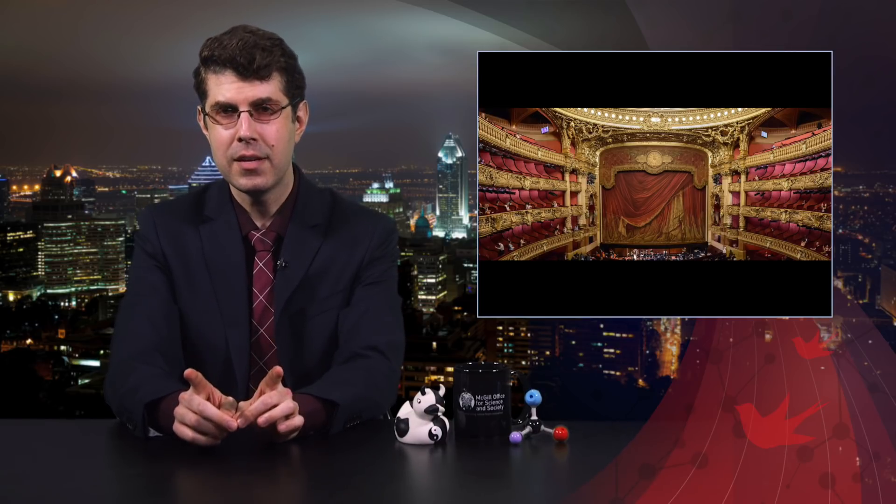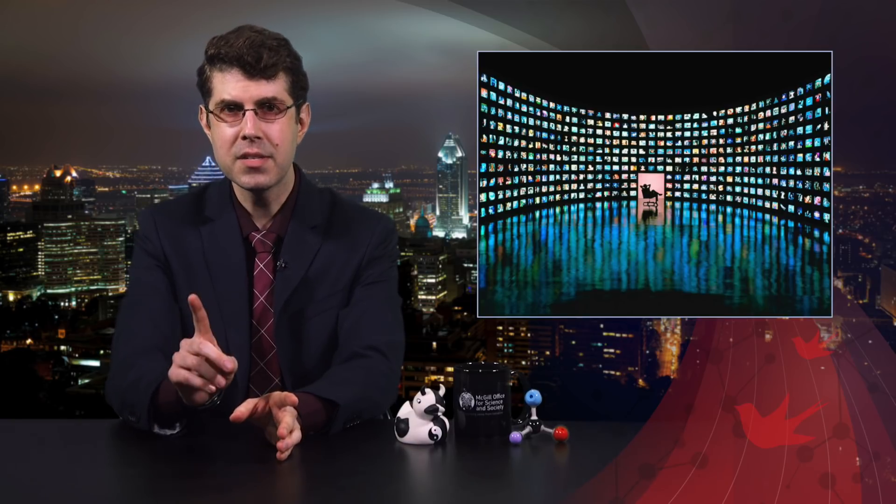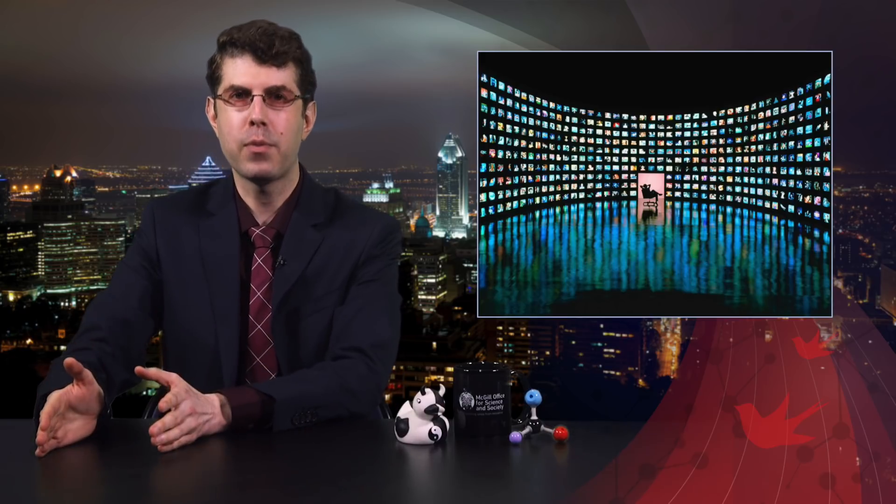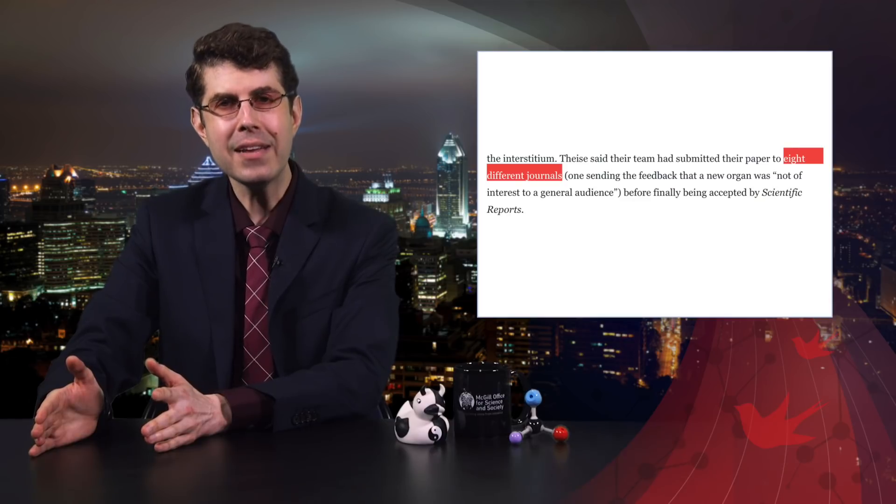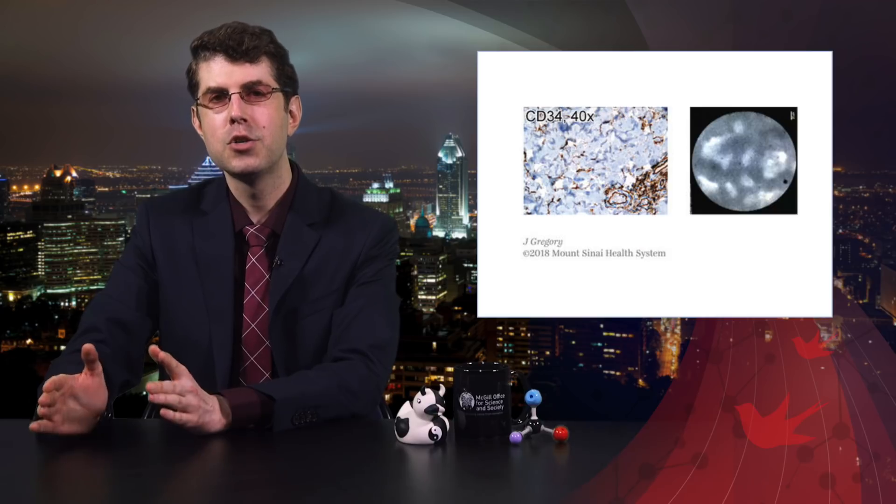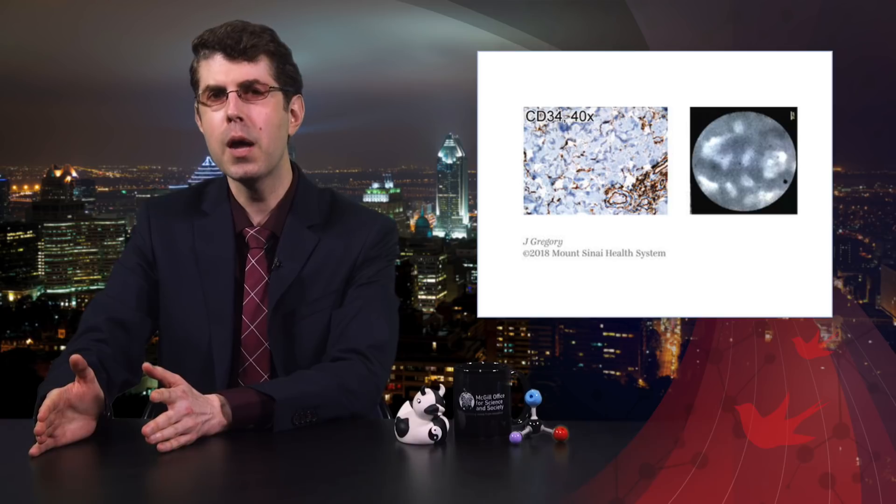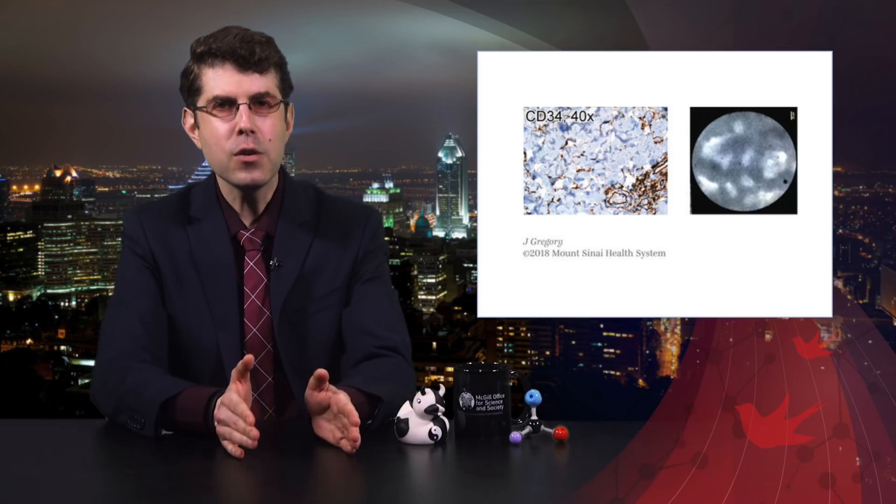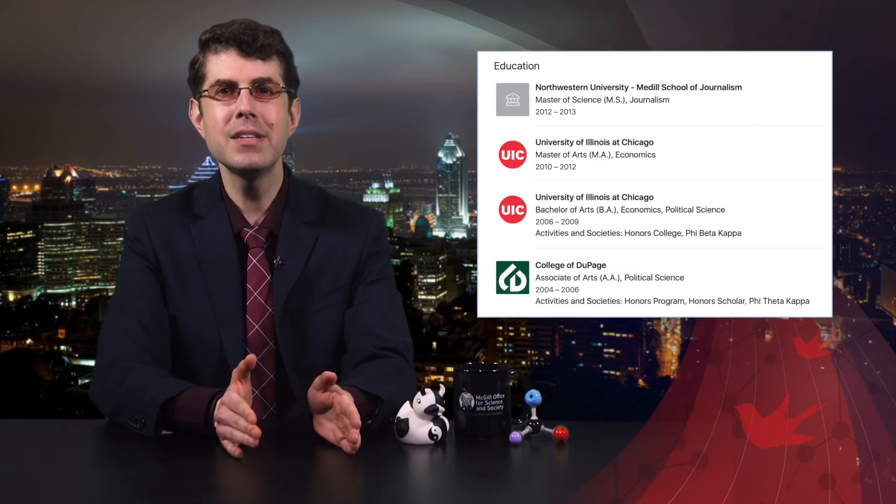So here we are, in 2018, assaulted every day by hyped-up information which affects our thinking. In this case, we went from a scientific paper which should have been published in a pathology journal, but which was, instead, rejected by eight different journals before being accepted in a journal that is not a pathology journal, showing us visualizations of a tissue that was known to exist and had been fairly well described before, to having its lead author tell an impressionable science reporter with no scientific background that he's discovered a new organ, and it might just explain acupuncture, which, by the way, totally works.